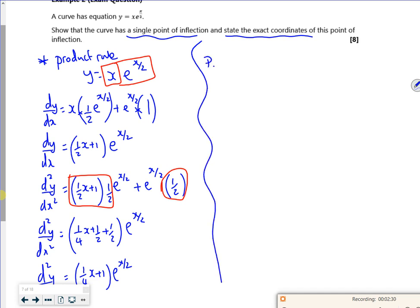So point of inflection is when d2y by dx squared is equal to 0.